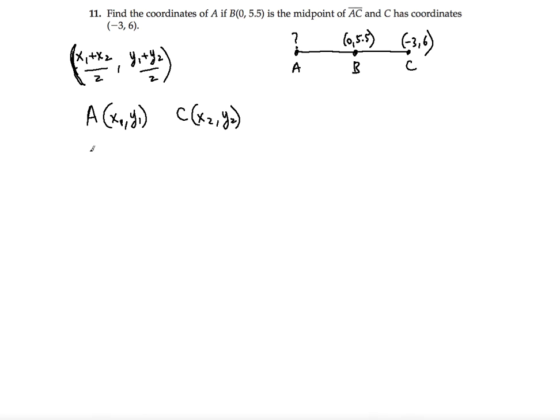So we can still use the formula. We're going to use x1 and x2 we know, because x2 is negative 3, and y2 is 6. So x1, and I'm just going to write this plus minus 3 because we have minus 3. So x1 minus 3 divided by 2.